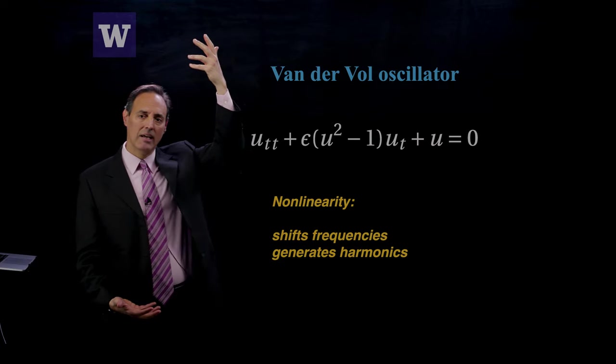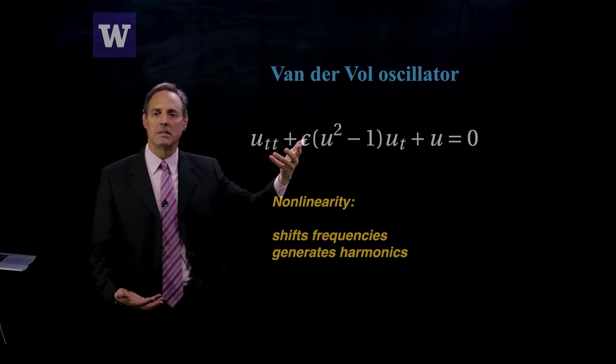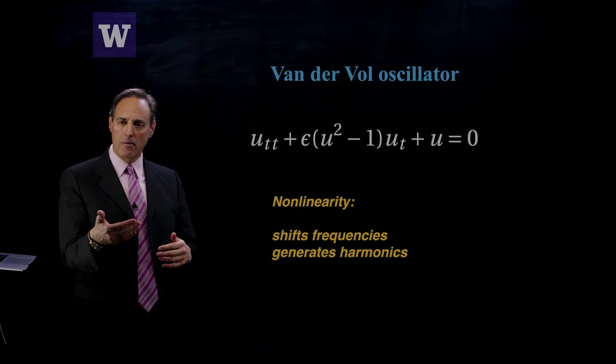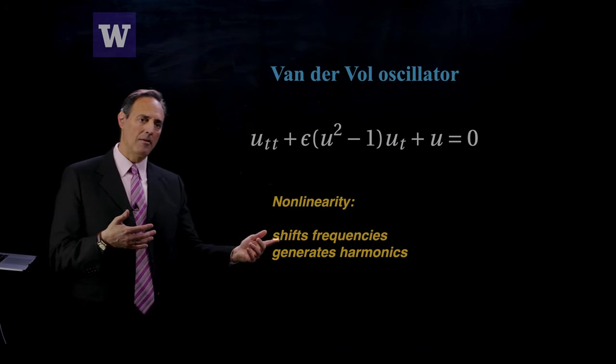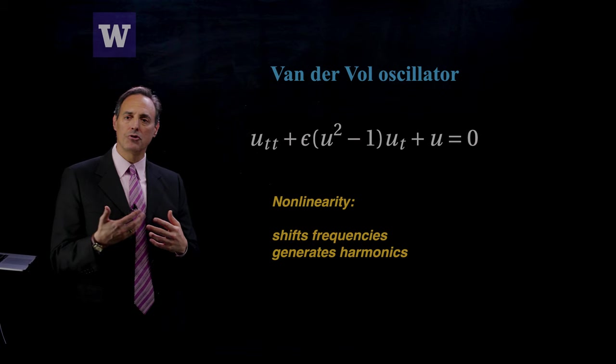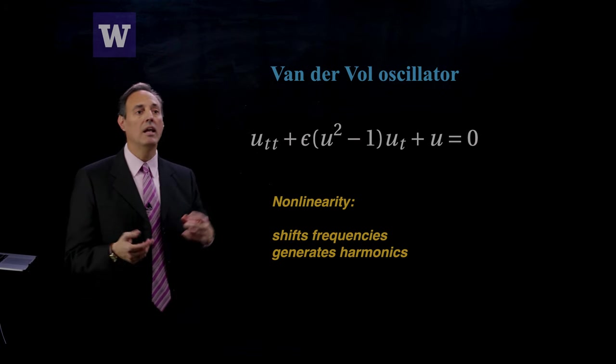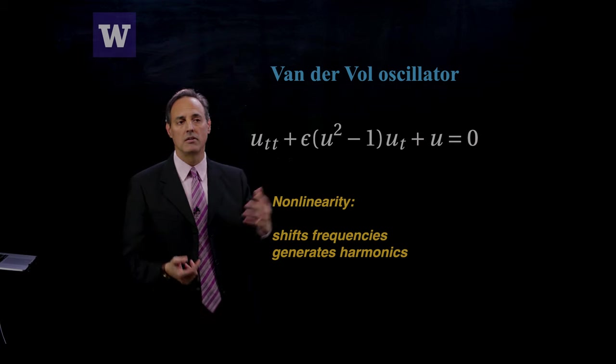This is something that regular perturbation theory certainly can't handle, the frequency shifts, and it also can't handle this initial transient behavior that we need to capture if we want to understand what goes on in this van der Pol oscillator.